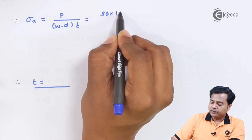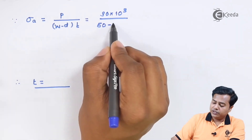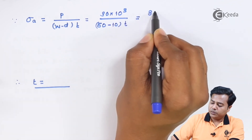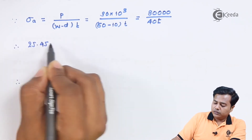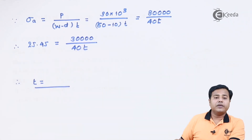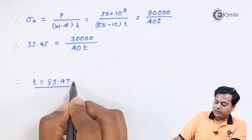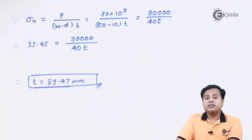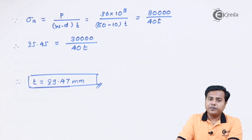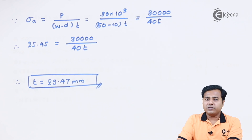The amplitude stress is also given by the axial load divided by the net cross-sectional area. The net width is (50 − 10) = 40 mm multiplied by the thickness t. Equating the two expressions for amplitude stress and solving, the plate thickness comes out to be approximately 29.47 mm. This is the design value of the plate thickness for infinite life under the given conditions. In the next session we will look at another example using the same strategy. Thank you for watching — please subscribe to Ikeda.